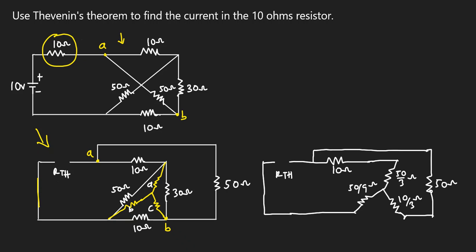To find R_th, notice that Rc (10/3 ohms) is in series with the 50 ohms resistor, giving 50 plus 10/3 equals 160/3 ohms. Separately, the 10 ohms resistor is in series with Ra (50/3 ohms), giving 10 plus 50/3 equals 80/3 ohms.